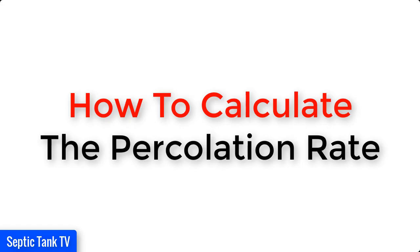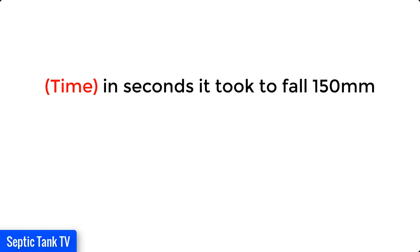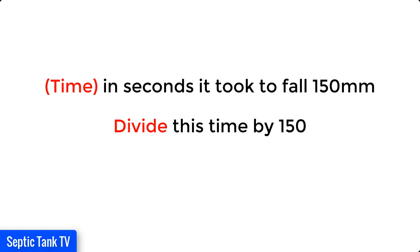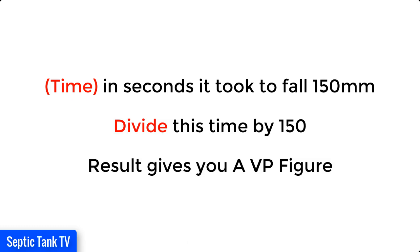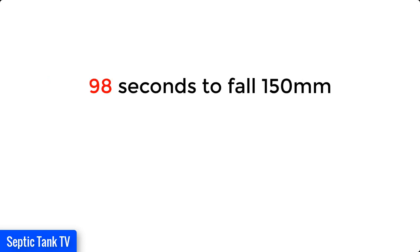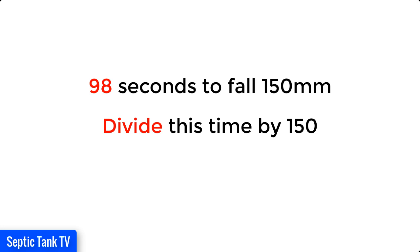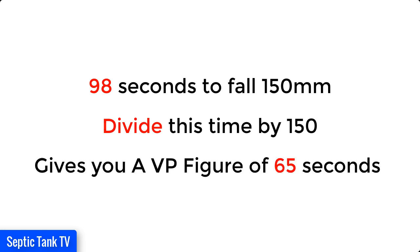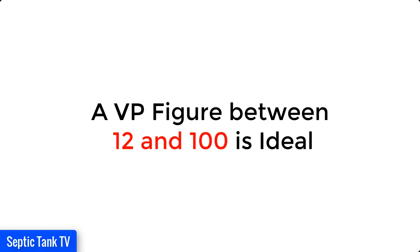So how do you calculate the percolation rate? It's really easy. You take the time in seconds for the water to fall 150 millimeters, then you divide this time by 150, and this result gives you a VP figure. For example, if it took 98 seconds for the water to fall 150 millimeters, you divide 98 by 150 and that gives you a VP figure of 0.65 seconds — which is brilliant, because a VP figure between 12 and 100 is ideal.